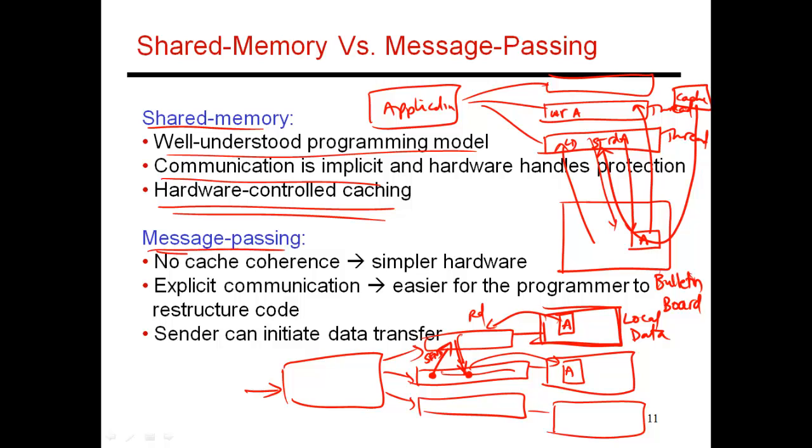Whereas in message passing, the onus falls more on the programmer, because it is the programmer's responsibility to issue these send and receive messages. And yes, there is caching, but that is not very problematic, because ultimately this thread issues a load. It gets the latest value of A, and then it has to ship this value across. So caching.